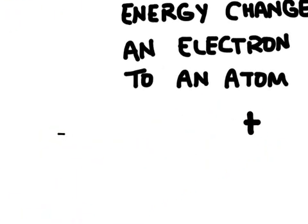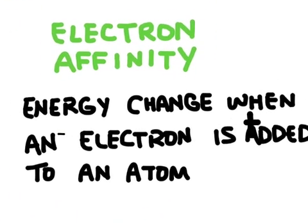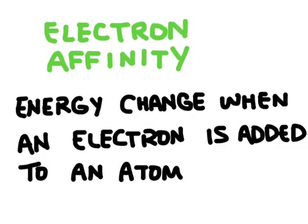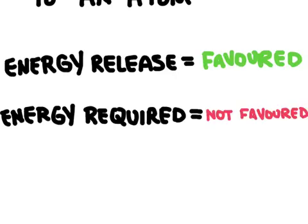So that's electronegativity. Let's take a look at electron affinity. Electron affinity is the energy change that's going to occur when an electron is added to an atom. So when an atom is actually able to pull in an electron, there's going to be a change in energy. Energy may be released or energy may be required to add that atom. In chemistry we can say that if energy is released, that's going to be a favored process. In other words, that is most likely going to happen. And so if energy is required, then it will not be favored.